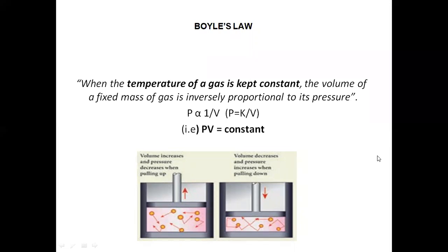P is inversely proportional to V, which means P is proportional to 1/V. Removing the proportionality constant gives P = K/V, where K is a constant. Cross-multiplying gives PV = constant. This is Boyle's law. When the temperature of a gas is kept constant, the volume of a given mass of gas is inversely proportional to its pressure.